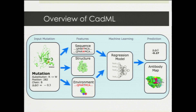Here's how CatML works. CatML takes in a mutation. A mutation is a substitution from one amino acid to another at a particular location in the antibody's amino acid sequence. Given that mutation, I extract information from the amino acid sequence, the 3D structure of the antibody, and the surrounding environment of the mutation site. All that information gets pulled into a machine learning model which predicts what the change in binding affinity would be following that mutation.